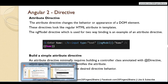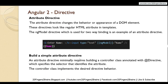We can also create our own attribute directives. An attribute directive minimally requires building a controller class annotated with @Directive, which specifies the selector that identifies the attribute. The controller class implements the desired directive behavior. Creating a custom attribute directive is not in scope of this video — we will do that in a future video — but the key concept is that attribute directives add behavior to elements.